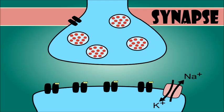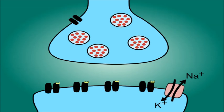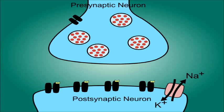The synapse is the place that connects two different neurons, from the end of one neuron axon to the dendrite of another neuron. The synapse is responsible for passing on signals between a presynaptic neuron and a postsynaptic neuron.